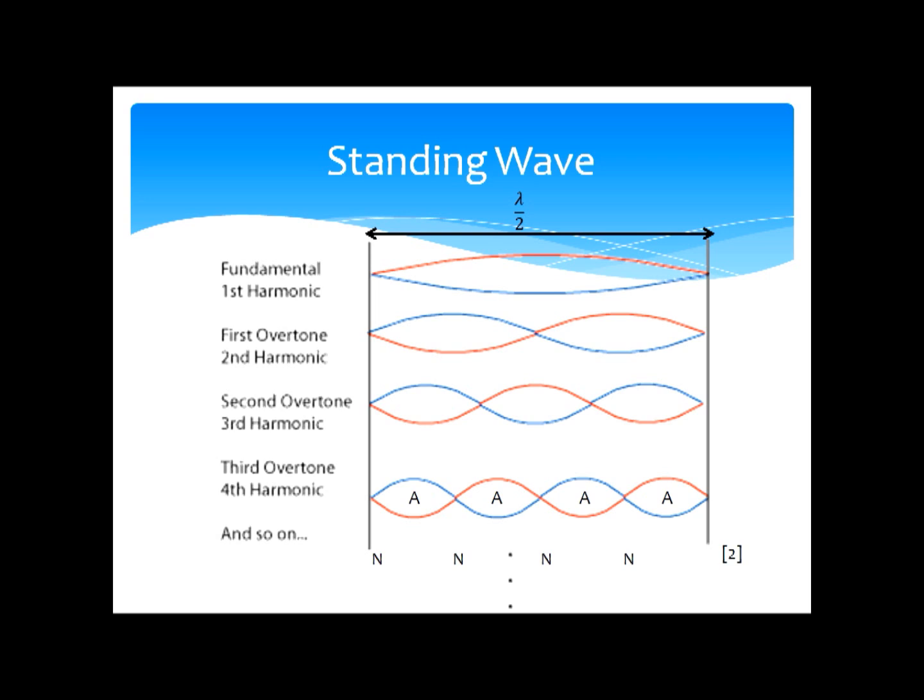This can continue until you see the bottom diagram here, which shows the fourth harmonic, which has four anti-nodes and five nodes.